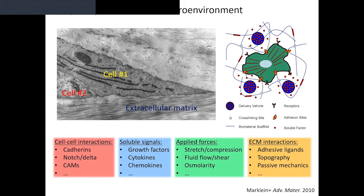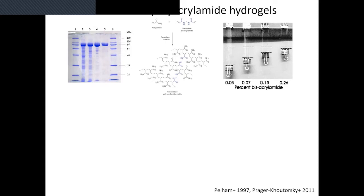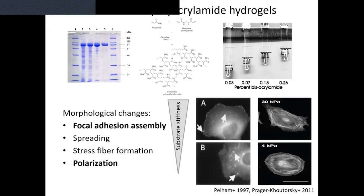The first example of this goes all the way back to the 1990s. Pelham and Wang took polyacrylamide gels — the ones proteins and DNA are run on — and found they could tune the two components to get different elasticities. Back then they showed this by hanging binder clips on the gels. They then functionalized these surfaces with an adhesive protein like collagen or fibronectin, and when cells were plated on top, the elasticity had a profound influence on how cells spread, formed focal adhesions, organized their cytoskeleton, and polarized.